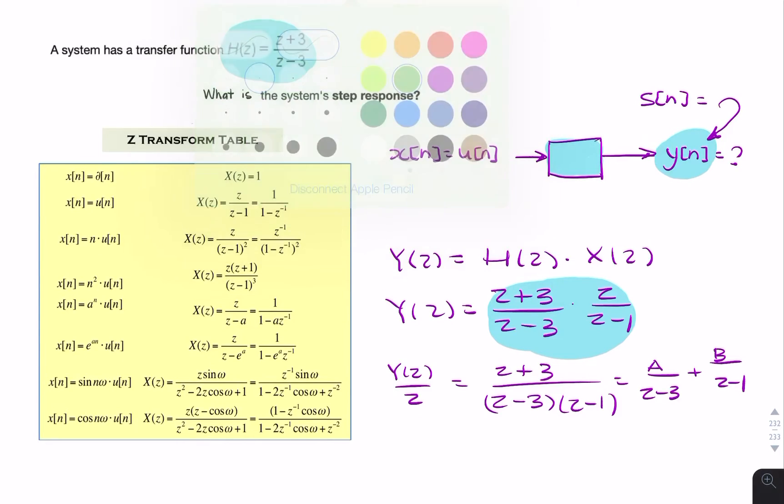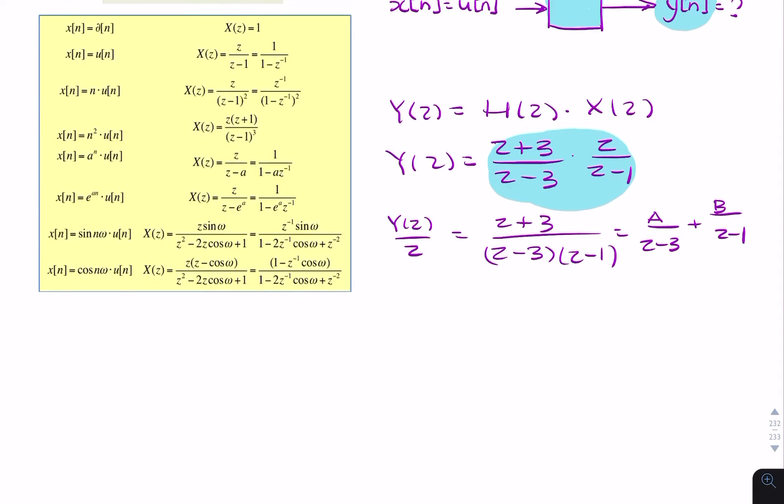Taking z equals 3 gives 2a equals 6, so a equals 3.